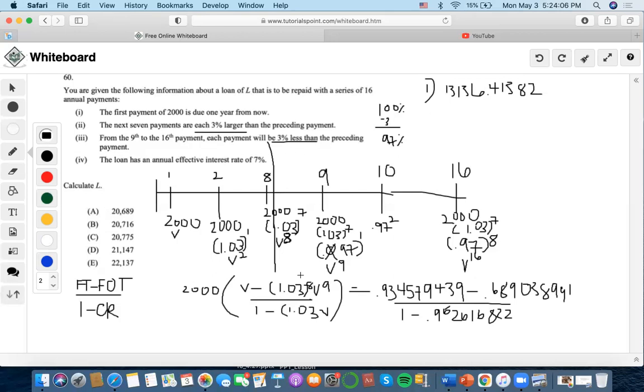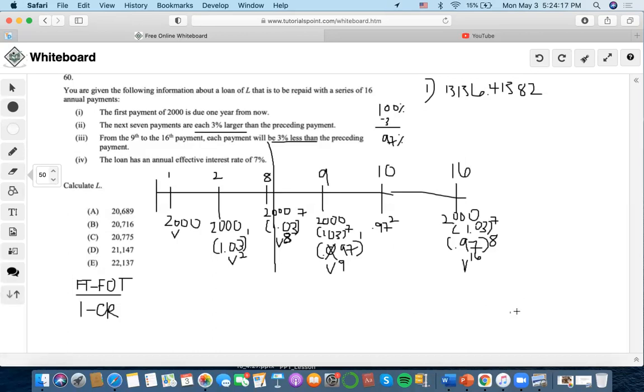Now the second part of the problem. So we already got this handled, so I'm going to erase this for more space. So now we're going to do the second part. The second part says that the first term is, so we see here, we're going to use time eight as a comparison date for this part. So we could take out $2000 because it's common. We could also take out 1.03 to the seventh as well. Now let's solve. So for the first term, it's 0.97 times v to the 9.